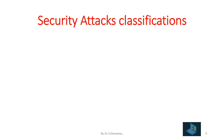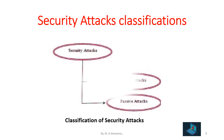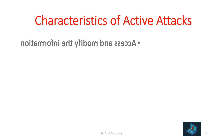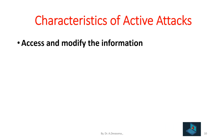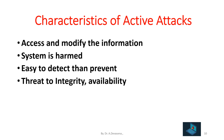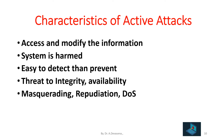Classification of security attacks: Security attacks are broadly classified into two categories — active attacks and passive attacks. Characteristics of active attacks: Active attacks access and modify the information. The system is harmed in active attacks. It is easy to detect than prevent active attacks. Threats include integrity, availability, masquerading, repudiation, and denial of service. These are the examples of active attacks.